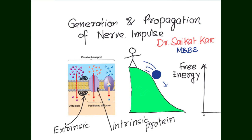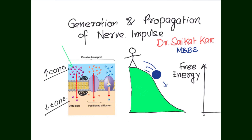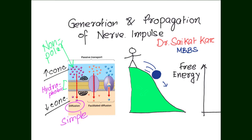The movement of substances across the cell membrane can be divided into two types: active or passive. In passive transport, molecules move from a higher concentrated region to a lower concentrated region without using energy. If molecules are small-sized and non-polar, they can easily cross the hydrophobic part of the cell membrane — this is simple diffusion. If molecules are charged or polar, they require an integral membrane protein and this is called facilitated diffusion, which also occurs without using ATP.